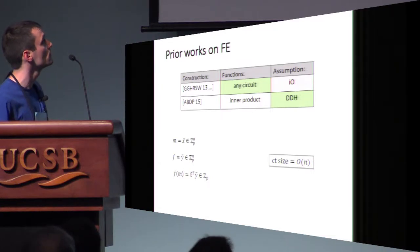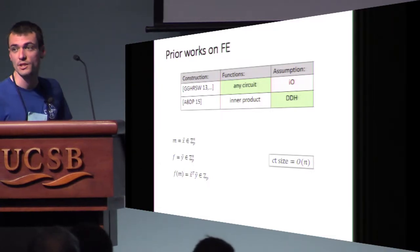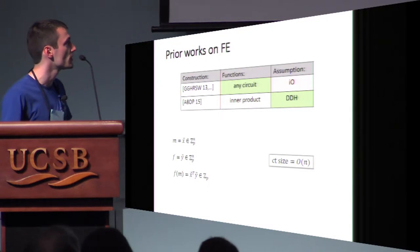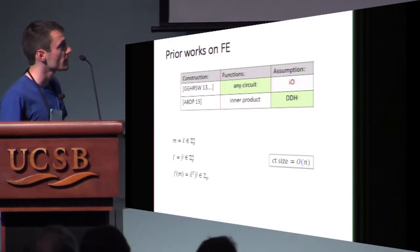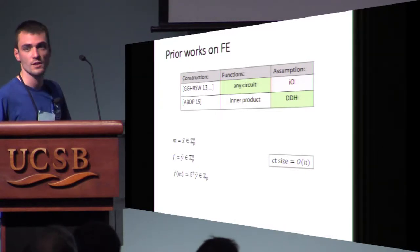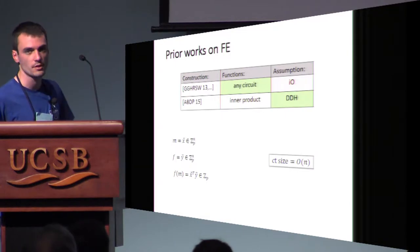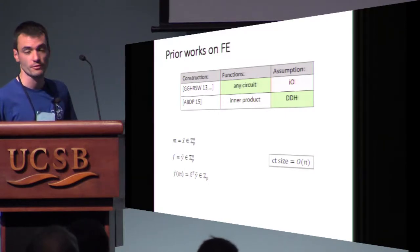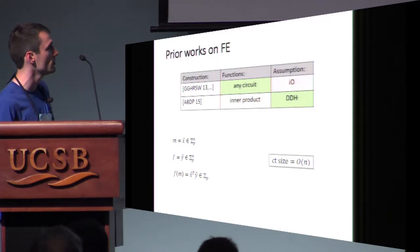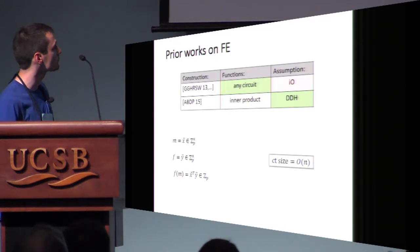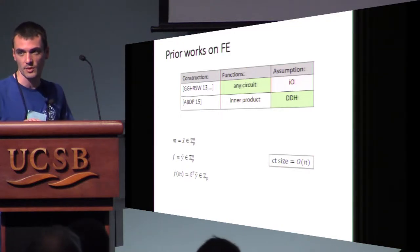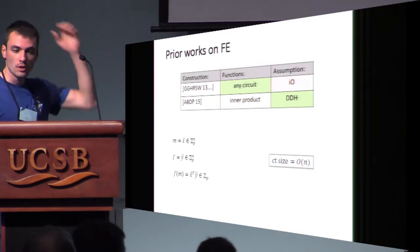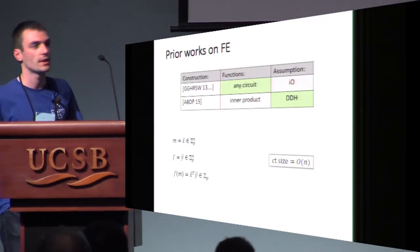What do we know how to do for FE? There are some general feasibility results for all circuits, based on strong assumptions — namely indistinguishability obfuscation for circuits. On the other hand, there are works that build FE from standard assumptions, much weaker, such as DDH, but they do so for restricted classes of functions. This is the case of ABDP: we built a functional encryption scheme for inner product under DDH, where the message is a vector and the function is also a vector of the same dimension, giving the inner product and nothing more. You can compute weighted sums on encrypted data with this.